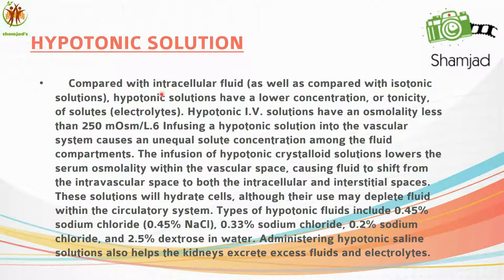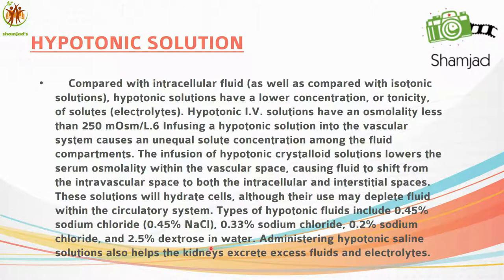Hypotonic solutions have a lower concentration or tonicity compared with intracellular fluid and isotonic solutions. Hypotonic IV solutions have an osmolality less than 250 milliosmol per liter. Infusing a hypotonic solution lowers the serum osmolality within the vascular space, causing fluid to shift from the intravascular space to both the intracellular and interstitial spaces, hydrating the cells but depleting fluid within the circulatory system. Types include half saline (0.45% NaCl), 0.33% sodium chloride, 0.2% sodium chloride, and 2.5% dextrose in water. Administering hypotonic saline also helps the kidneys to excrete excess fluid and electrolytes.